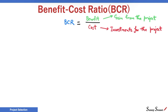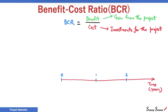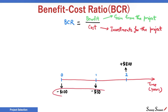We will take an example to understand this concept. We have a project that will last for two years. Cash flow is minus $100 for year 0, minus $50 for year 1, and plus $800 for year 2. Negative cash flow in year 0 and year 1 is the cost. Positive cash flow in year 2 is the benefit.